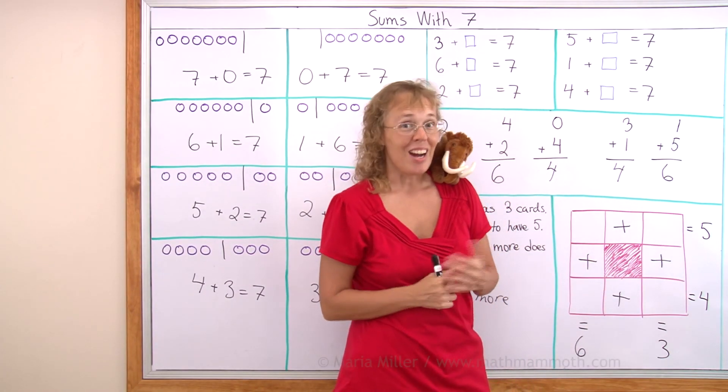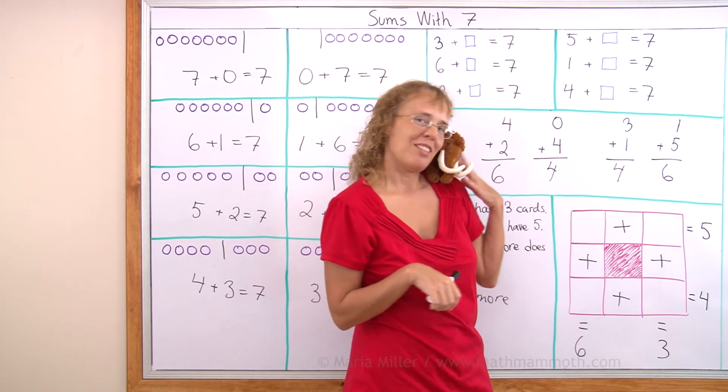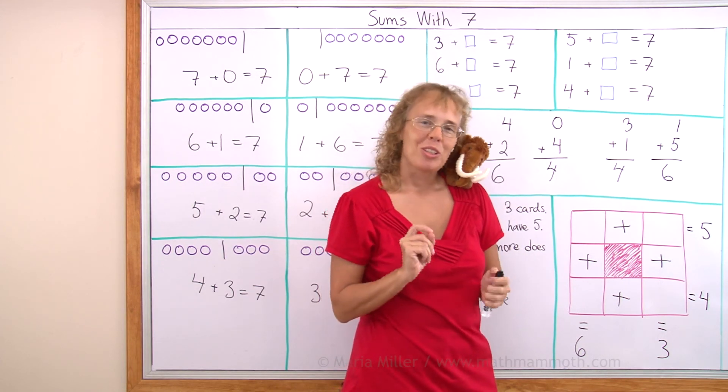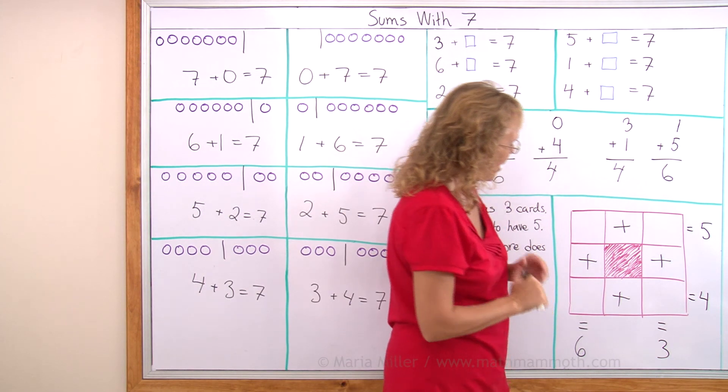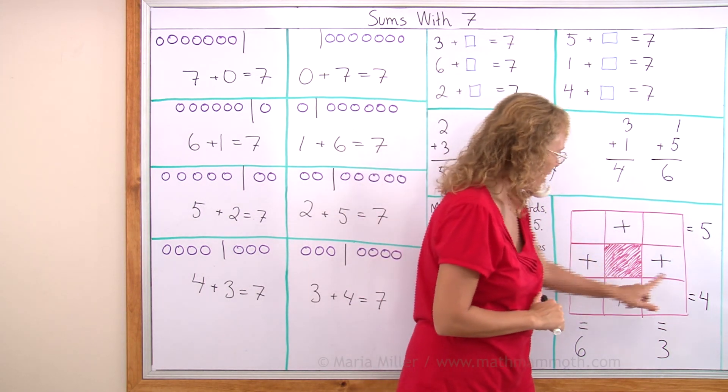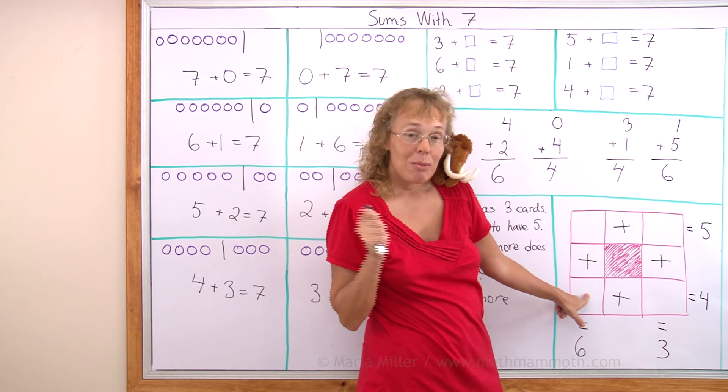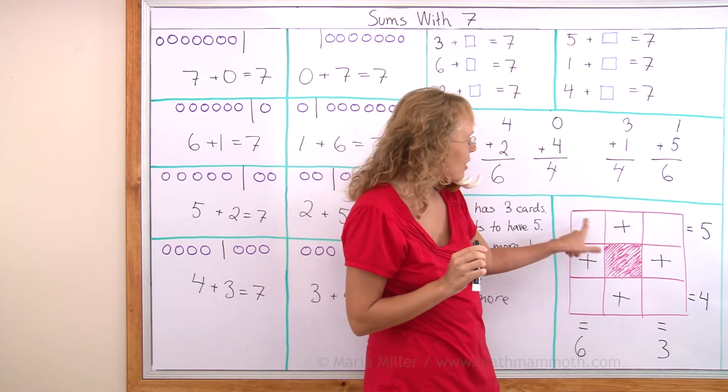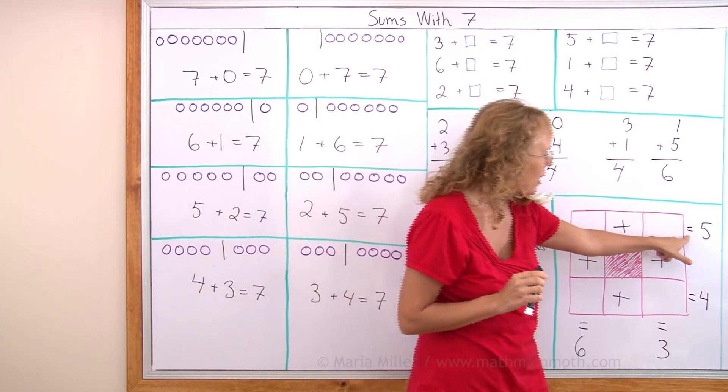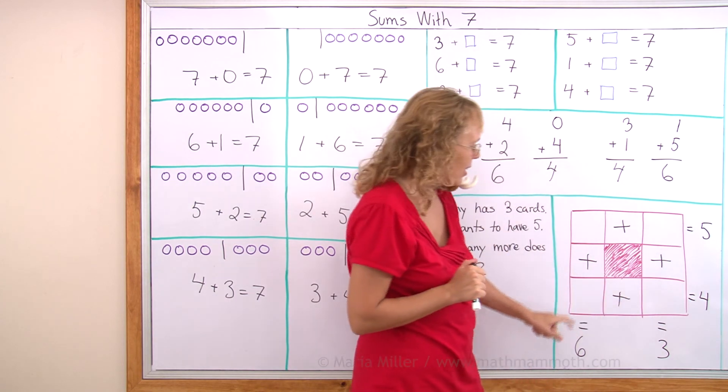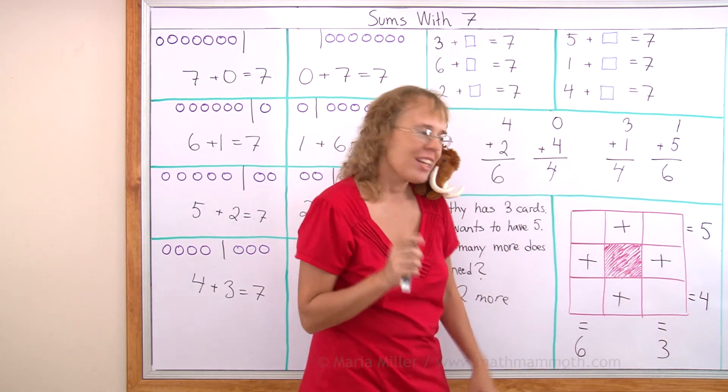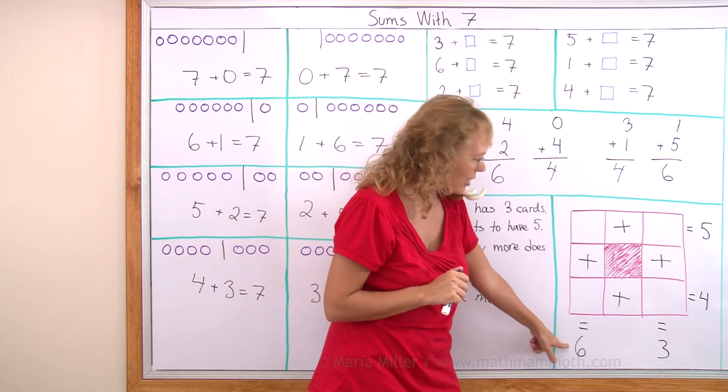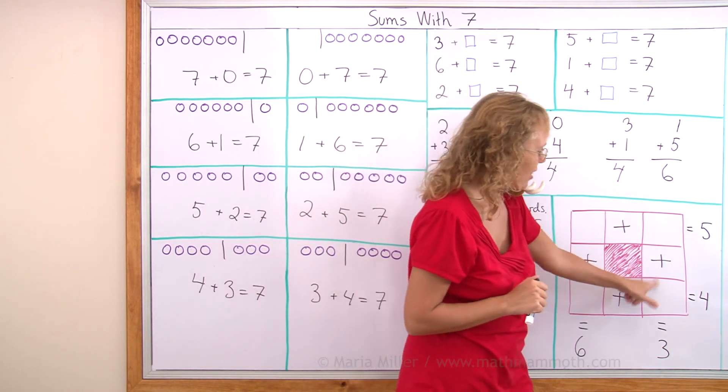This is a little puzzle. I love puzzles. Mathie loves them too. And I'm sure you will learn to love math puzzles too. This puzzle we need to put numbers in these empty boxes. And then the numbers have to be so that this number plus this number makes five. And then this plus this has to make four. But not only that, this and this has to make six, and this and this has to make three.